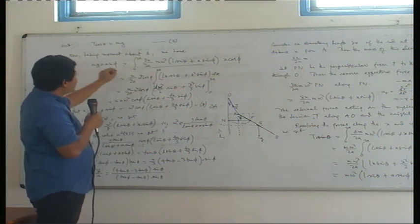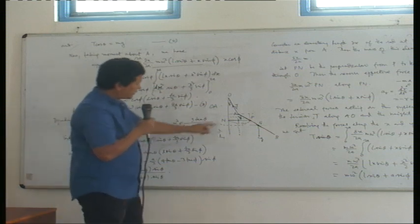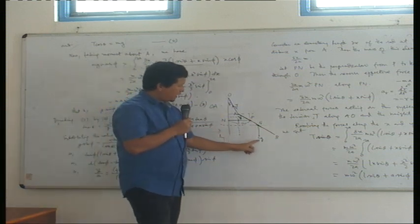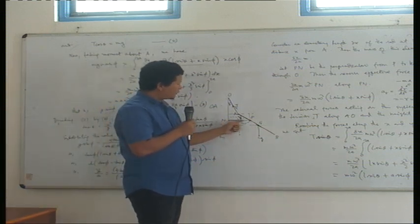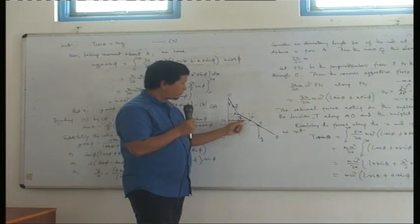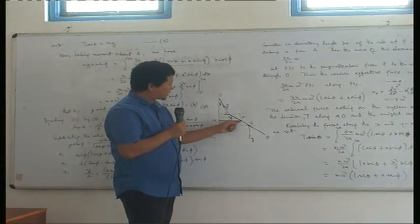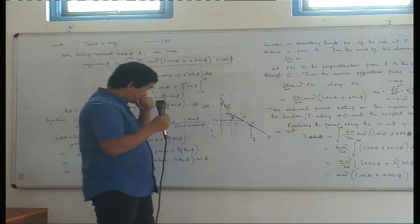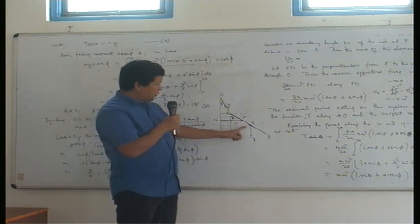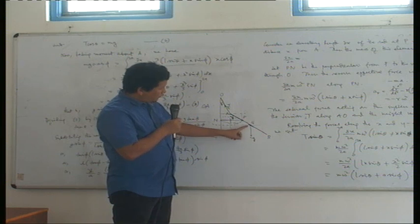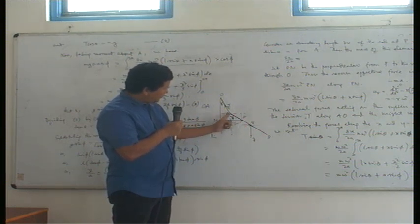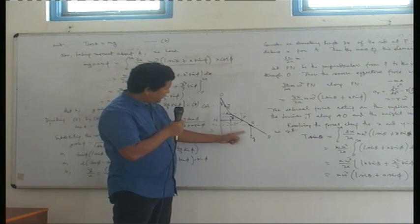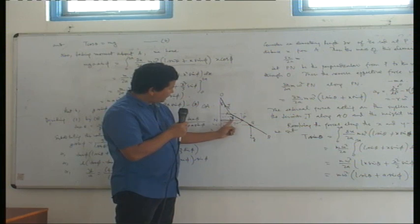Now if we take the moment about this point, we have force Mg and another force which is the effective force along this direction, Np. The moment of force Mg will be this force times the perpendicular distance, giving us Mg times A sin phi.